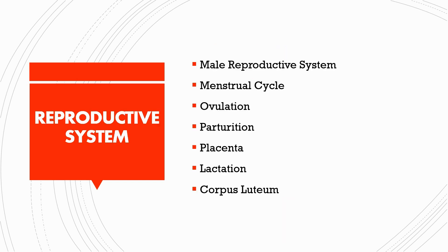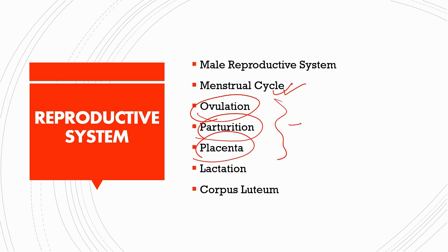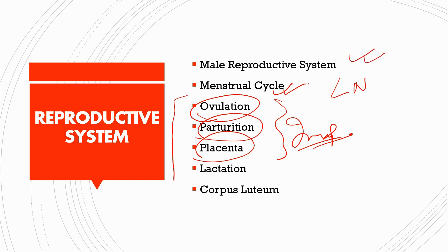That's the end of the endocrine system. Next we have the reproductive system, from which really one or two questions are asked every year. The menstrual cycle, or short notes on ovulation, parturition, and placenta are very important from this unit. If a long note comes, it might be on the male reproductive system or menstrual cycle, but for short notes this part is highly important.